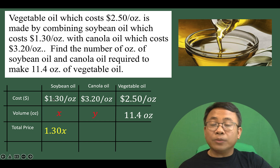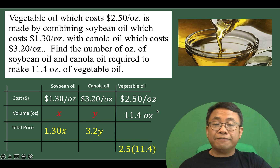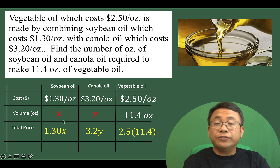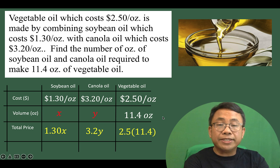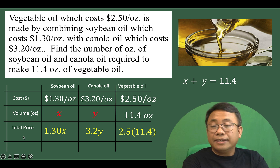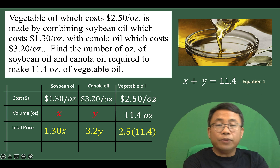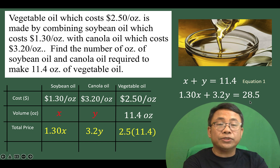If the cost per ounce is $1.30 for soybean oil and there are x ounces, the total cost is the product of $1.30 and x. The same logic applies for canola oil and vegetable oil. We'll have two equations in two variables. First, the combined volume of soybean oil and canola oil equals the mixture: x plus y equals 11.4 ounces. Second, the total price equation: 1.30x plus 3.2y equals 28.5.